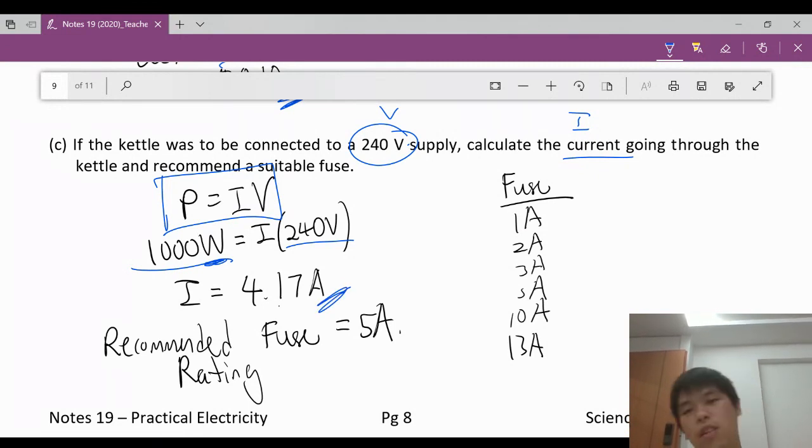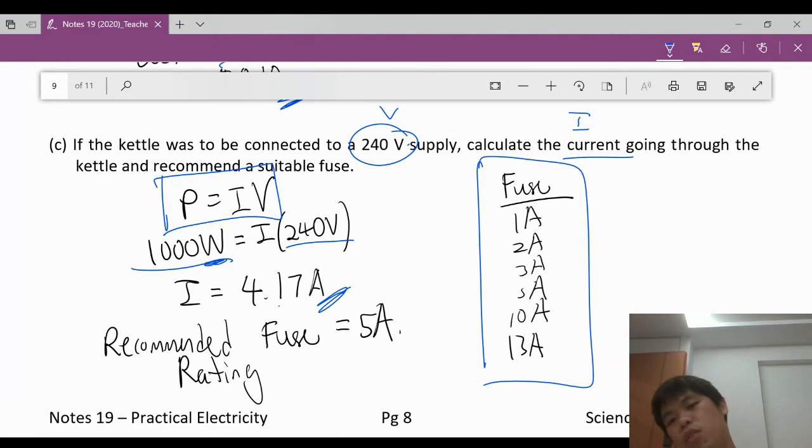What are the fuses that we have? There are only the fuses with the following ratings: 1, 2, 3, 5, 10, 13. We need to be slightly higher than the one that we are in operation here. Slightly higher than 4.17? Only 5 ampere. So, we want the fuse rating to be 5 ampere. Slightly higher than 4.17. So, with that, we will end on the topic of dangers and hazards of electricity.